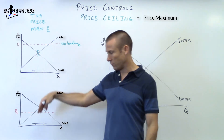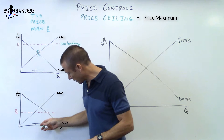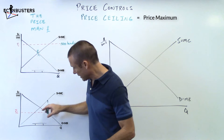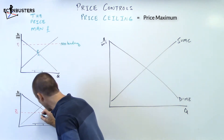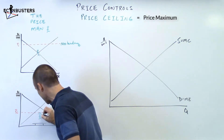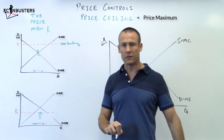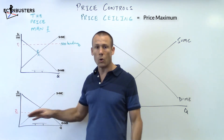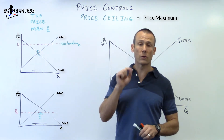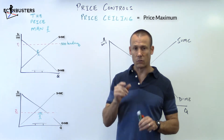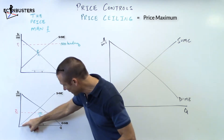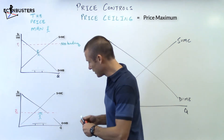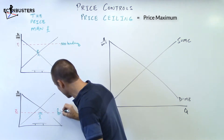Now look over here — it's the price man jumping on that trampoline. He wants to get to the market clearing price, but what is he doing? He is hitting his head on the ceiling. That is a binding price ceiling. Price ceilings set below the market equilibrium price — those are the ones that are binding. A price ceiling is a maximum; the price man can go anywhere below the price ceiling, he just can't go above it.